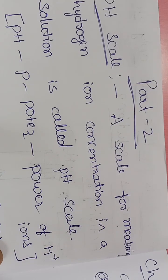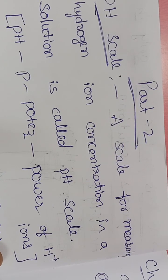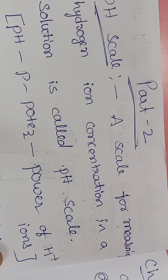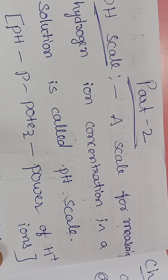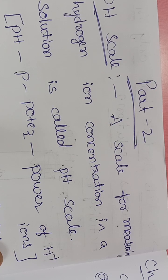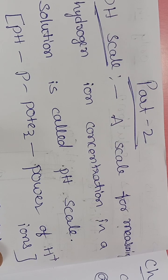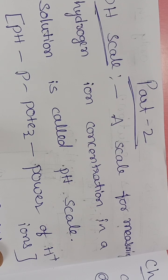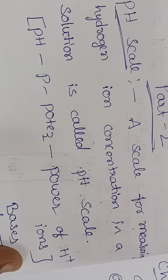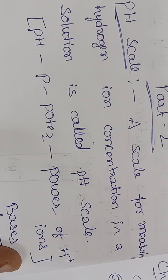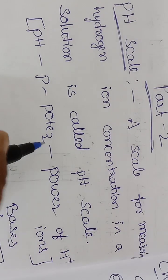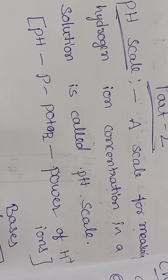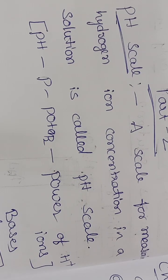Next, the pH scale. A scale for measuring hydrogen ion concentration in a solution is called the pH scale. We use the universal pH scale generally to test whether a given solution is a strong acid, weak acid, basic, or acidic in nature. The 'p' in pH stands for 'potenz' - meaning the power of H⁺ ions.